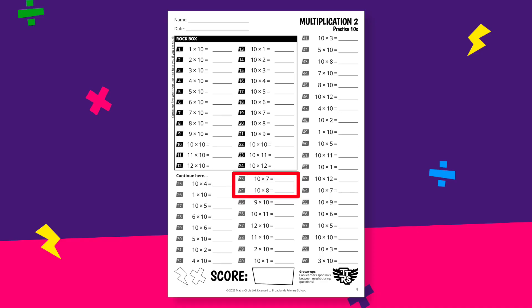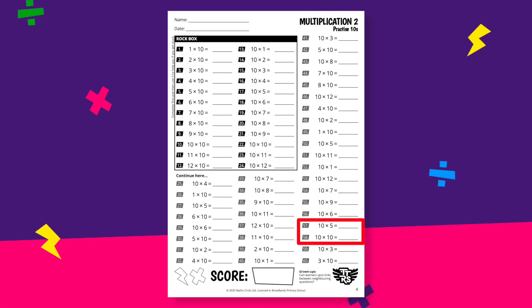Some neighbouring questions have increased or decreased by one of the factors. So, for example, you might see seven times ten followed by eight times ten, and that's great when the students can spot one group more, one group less. Other pairings include doubling the factors — so neighbouring questions might go from five times ten to ten times ten, which is great for learning that if you double or halve one factor, you'll double or halve the product. This is also known as the associative law of multiplication.